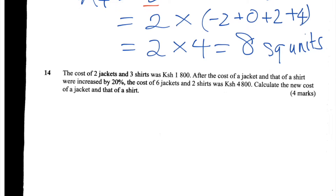This is question number 14 of the 2015 KCSE Maths Paper 1. The cost of two jackets and three shirts was 1,800 shillings. After the cost of a jacket and that of a shirt were increased by 20%, the cost of six jackets and two shirts was 4,800 shillings. Calculate the new cost of a jacket and that of a shirt.